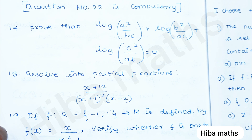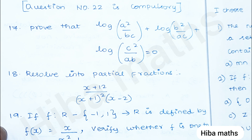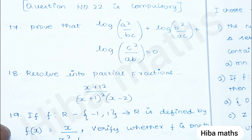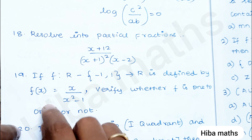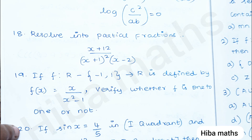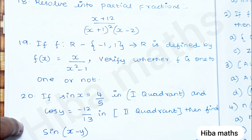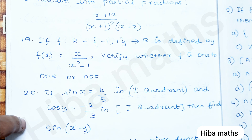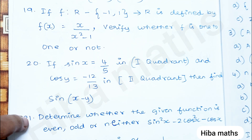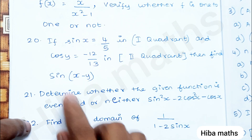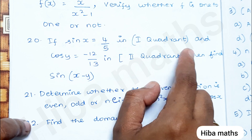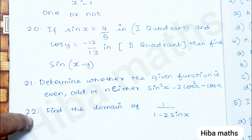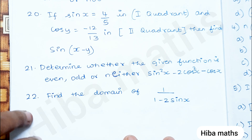We will try to work out the prove sums. LHS equals RHS — we will mark the value step by step. This is a trick. At the 20th question: if sin x = 4/5 in the 1st quadrant and cos y = −12/13 in the 2nd quadrant, then find sin(x − y). So we need to find the value of x − y.